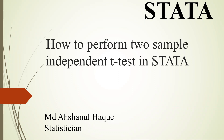For a continuous outcome variable where the group variable is binary, we have to perform a two-sample independent t-test. For example,